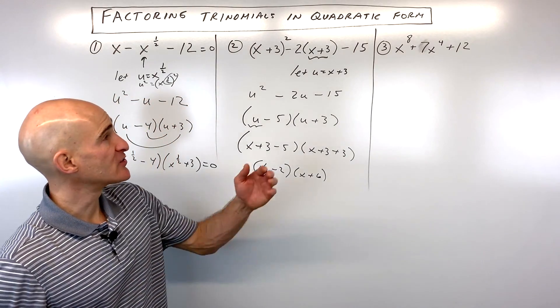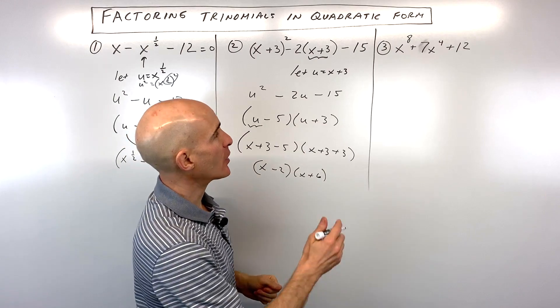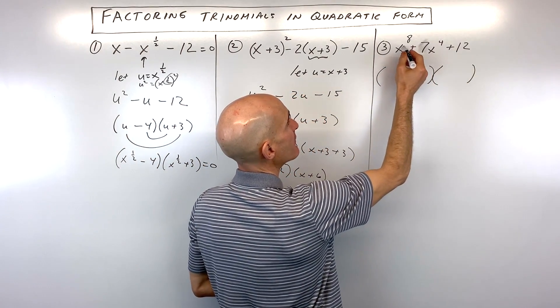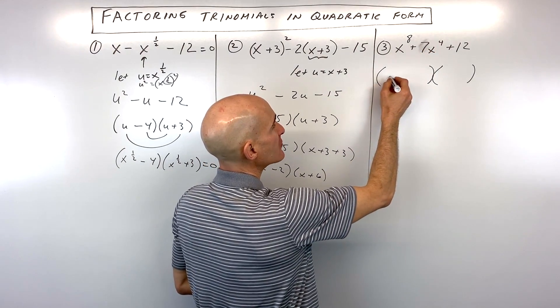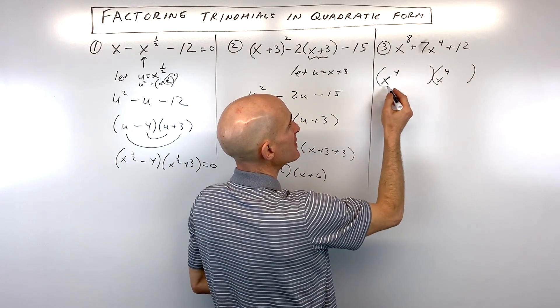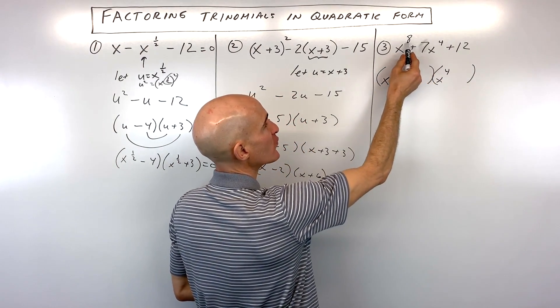So you've got that one. Now let's look at number three, the last one. At this point, you probably can recognize a quicker way of doing this. You can say to yourself, I recognize that x to the fourth is half of x to the eighth, or I should say four is half of eight. So when I factor this, I'm going to go right to x to the fourth and x to the fourth, because when you multiply and you have the same base, you add the exponents, four plus four gives us eight.